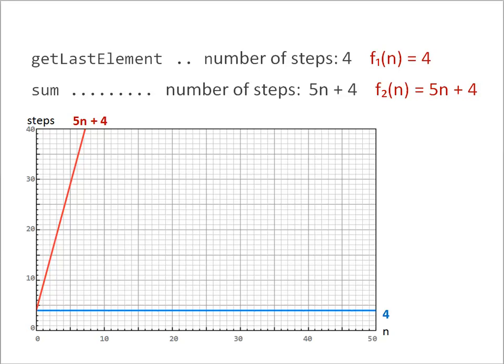Now you can see an additional red line. This is the graph corresponding to the method sum. It shows how many steps need to be taken to run the method sum based on a given input N. Notice the positive slope here. The bigger the N, the more steps are required.